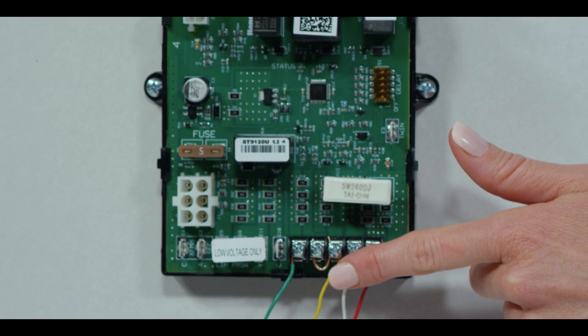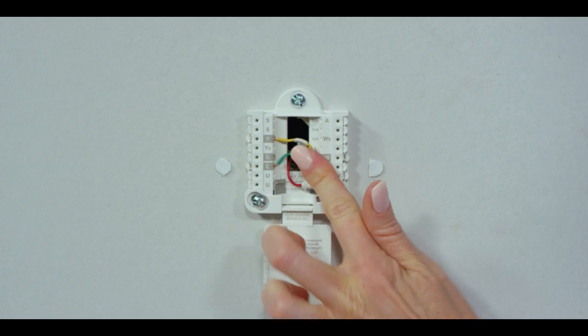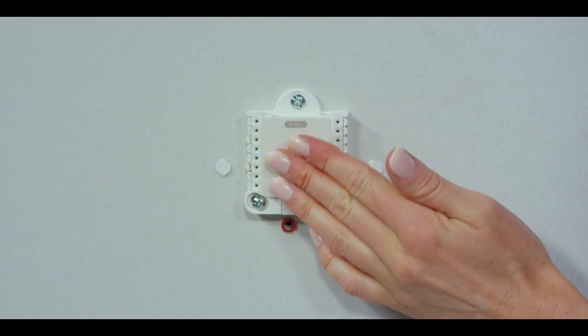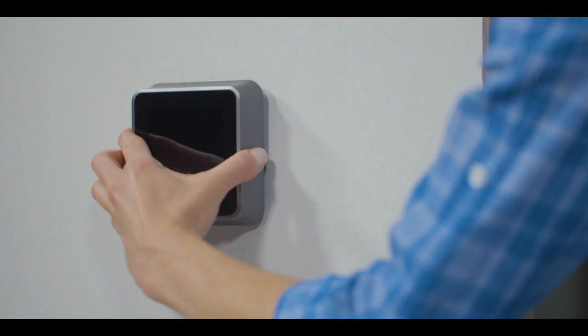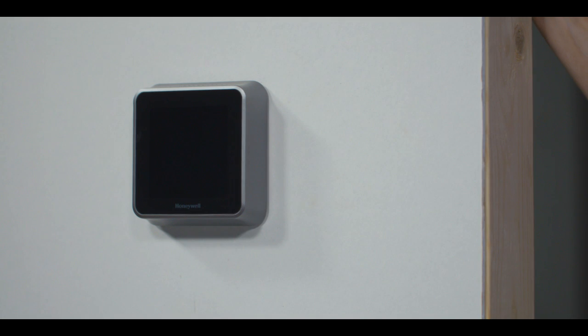If there's already wires attached, just leave them be. Go ahead and push all the wires in and close the backplate. Pop the thermostat faceplate back on.